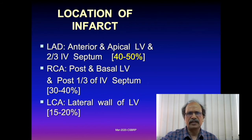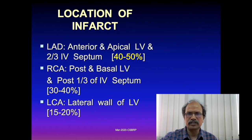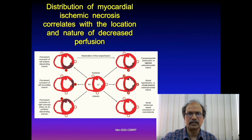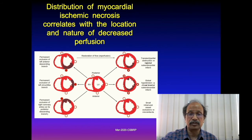If the left anterior descending artery is involved, the anterior and apical portions of the left ventricle and the anterior two-thirds of the interventricular septum are infarcted. The top left diagram shows involvement of the anterior wall and anterior two-thirds of the interventricular septum.